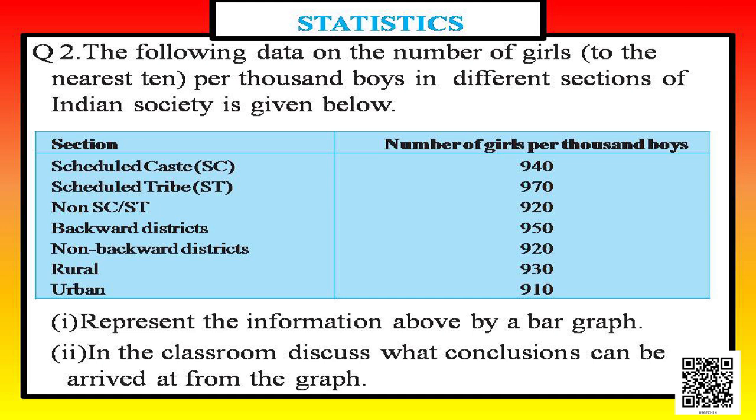The question says: the following data on the number of girls to the nearest ten per thousand boys in the different sections of Indian society are given below. The table has a section column: Scheduled Caste is 940, Scheduled Tribe 970, Non-SC/ST 920, Backward Districts 950, Non-Backward Districts 920, Rural 930, and Urban 910. They asked us to draw the bar graph.